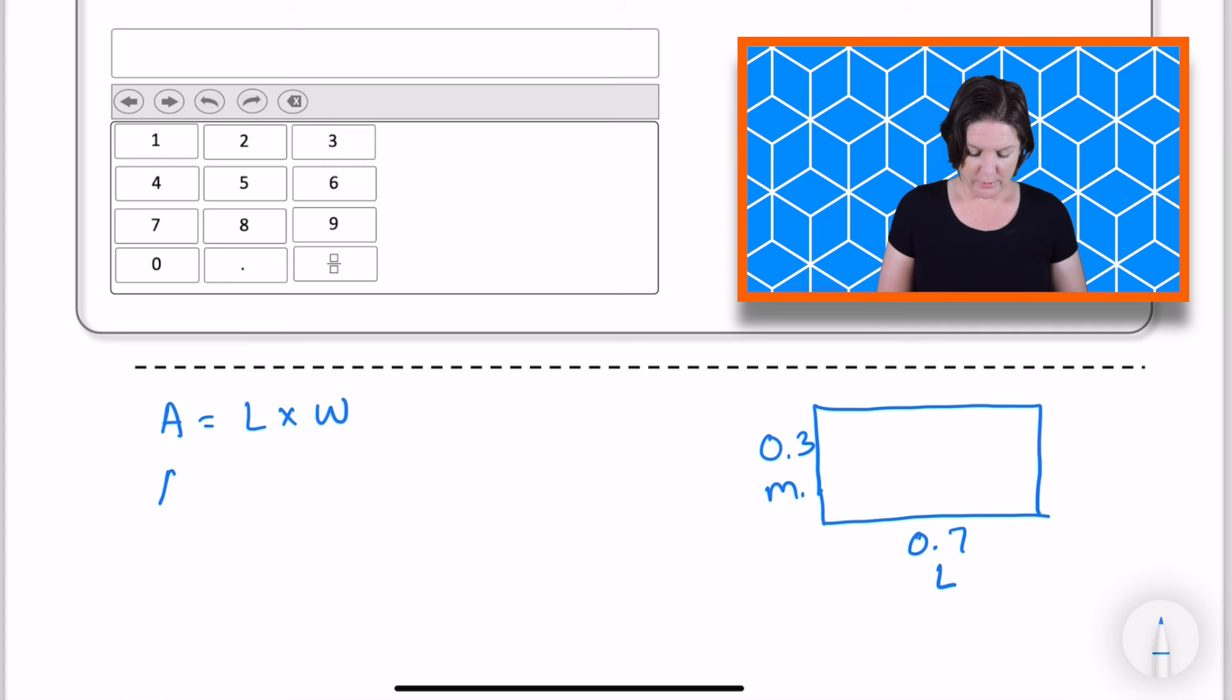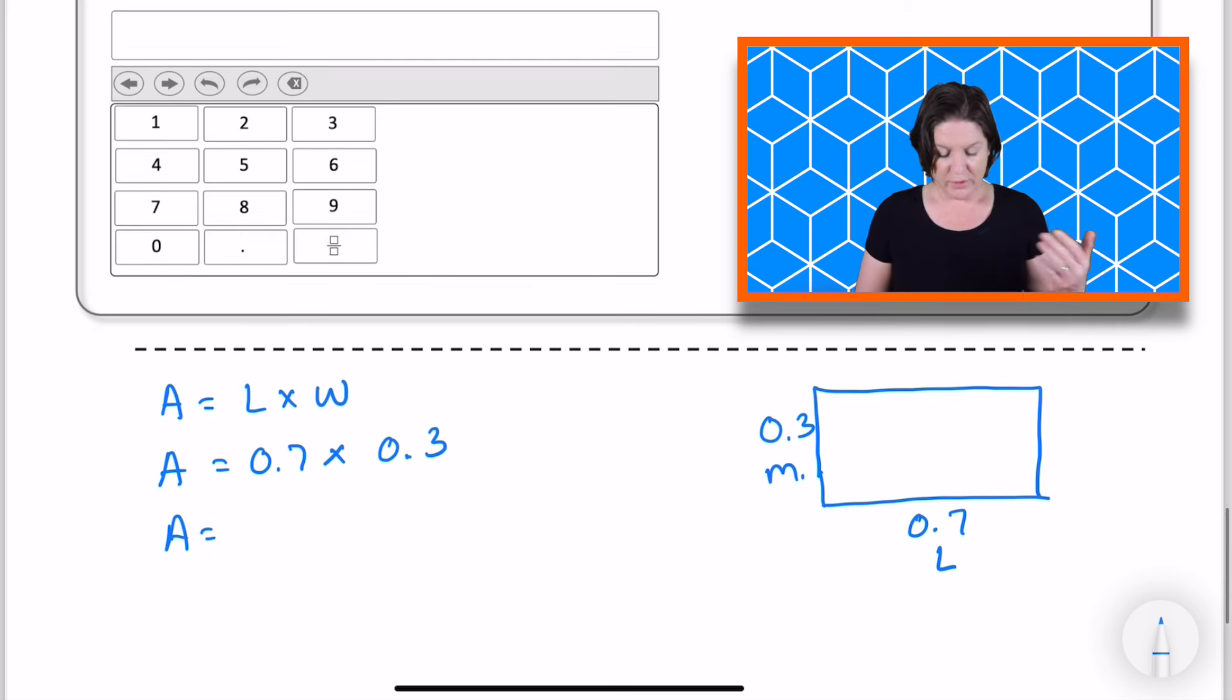So if I plug in those values, I know I'm trying to find the area, the length is what? 0.7 meter times the width, which is 0.3 meter. Excellent. And here we can use what we know about multiplication to say that we know that seven times three is 21. Because we're multiplying two amounts that are less than one, we know that our product is also going to be less than one.